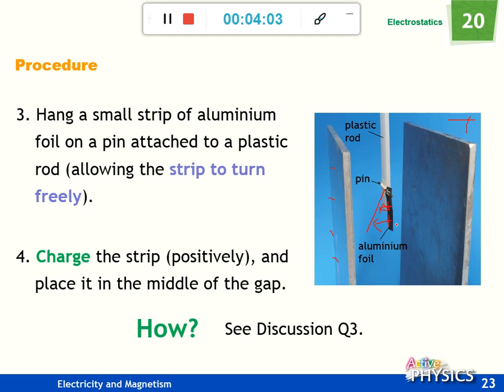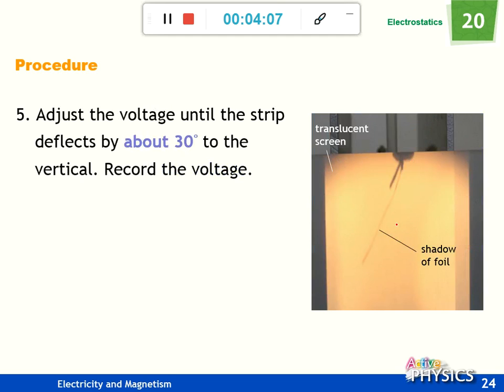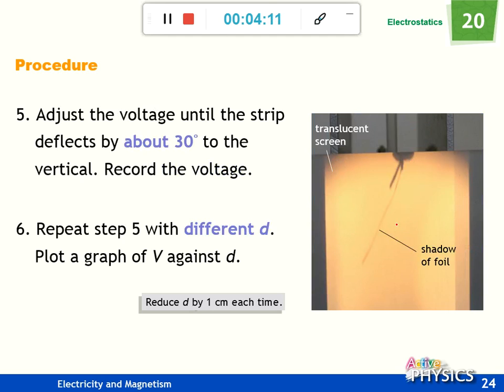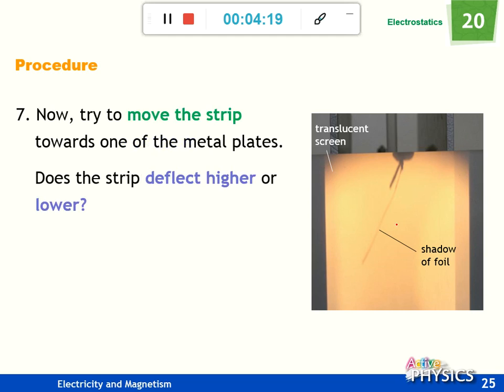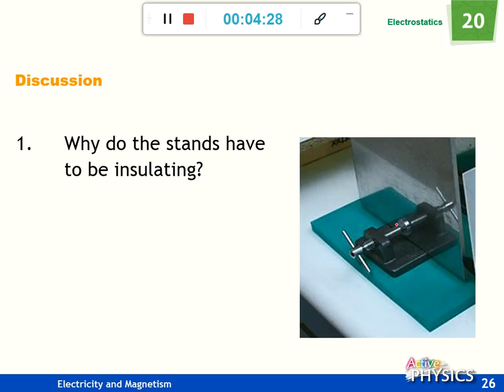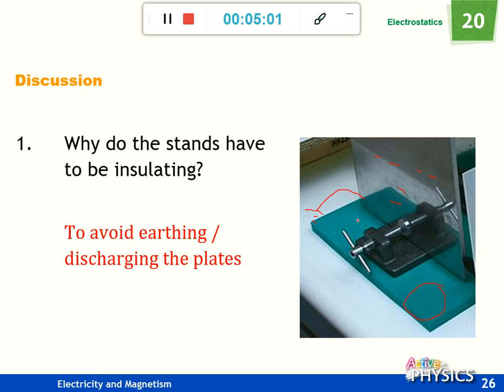Discussion Question 1: Why do the stands have to be insulated? For example, this one may be plastic. Even if we use EHT to make this plate negative, if this one can connect to the earth, the electrons will go to the earth due to earthing and discharge. To avoid this, you should put an insulator on it to avoid earthing and discharging the plate.